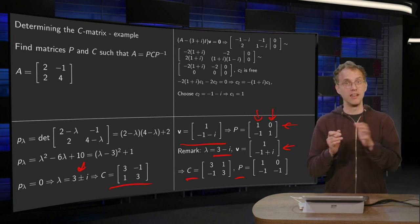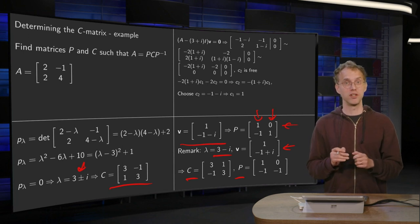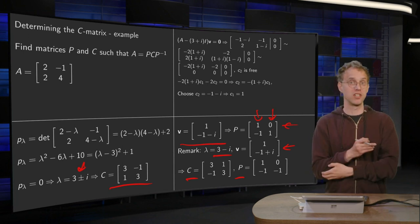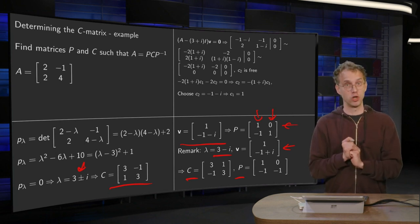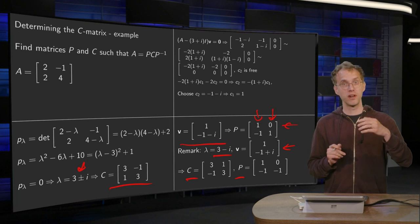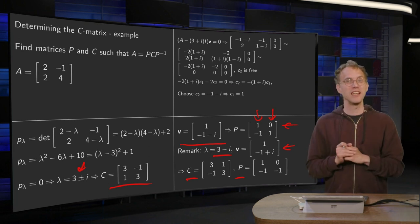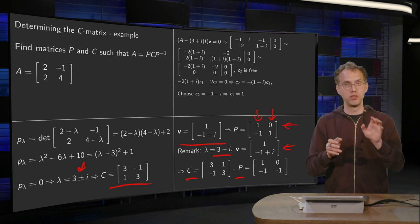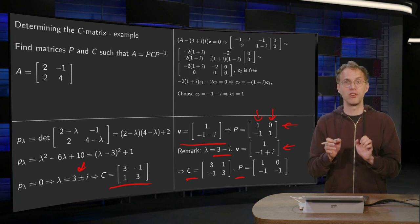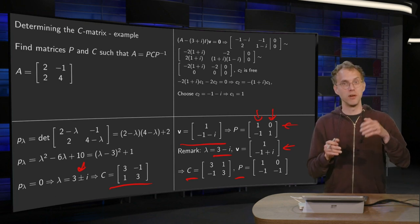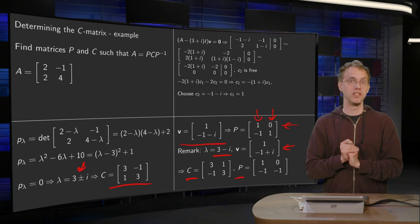So the products PCP inverse are the same in both cases. So in problems like this, you always have a choice for the choice of your eigenvalue. It gives you slightly different P, slightly different C's. But this may remind you, of course, of the diagonalizations where you also have some choice which eigenvalue put first. However, both choices are correct. The results give you, in both cases, A equals P times C times P inverse.